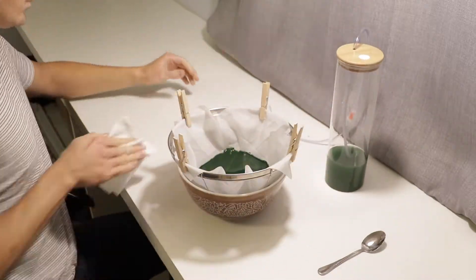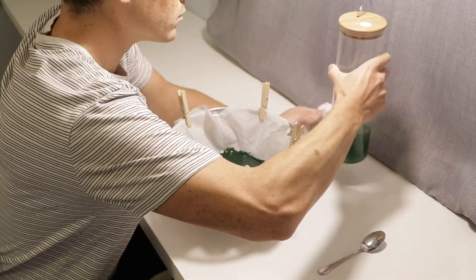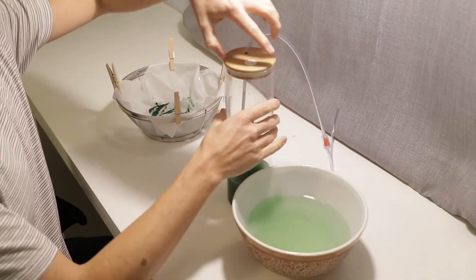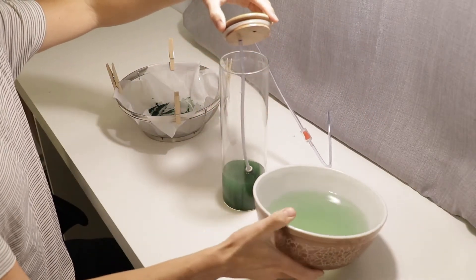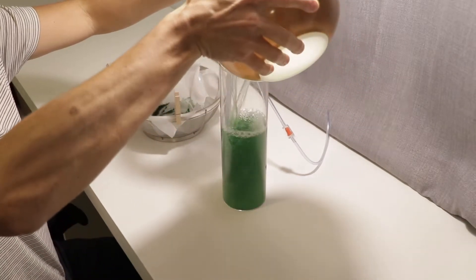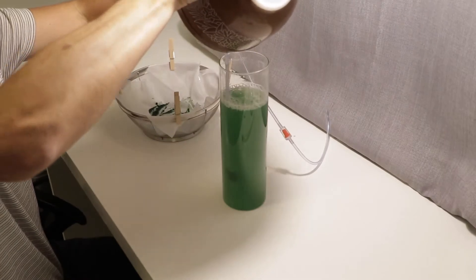The general rule of thumb is to harvest two-thirds and leave one-third of culture in the tank. For the kit I offer at bluegrownlife.com I keep my container about 70% full and will pour out enough spirulina until I have about two to three inches left in the tank. I just eyeball this.